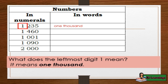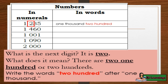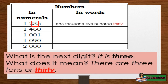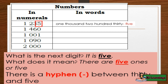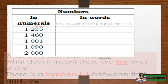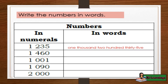What does the leftmost digit 1 mean? It means 1,000. What is the next digit? It is 2. What does it mean? There are two hundreds, or 200. Write the word 200 after 1,000. What is the next digit? It is 3. What does it mean? There are three tens, or 30. What is the next digit? It is 5. What does it mean? There are five ones, or 5. There is a hyphen between 30 and 5. So 1,235 is written as one thousand two hundred thirty-five.